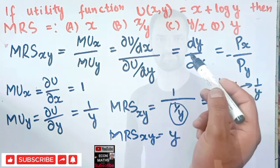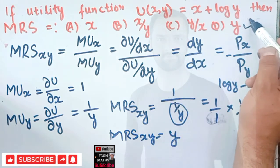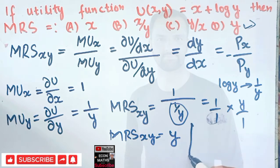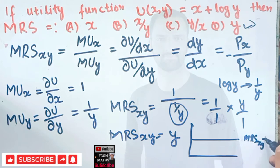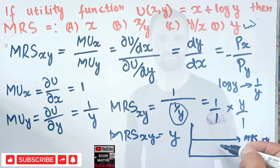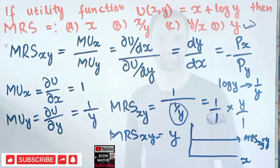So MRS between x and y is equal to y, making the correct option y. We can interpret this geometrically: when MRS between x and y equals y, the indifference curve may look parallel to the x-axis.